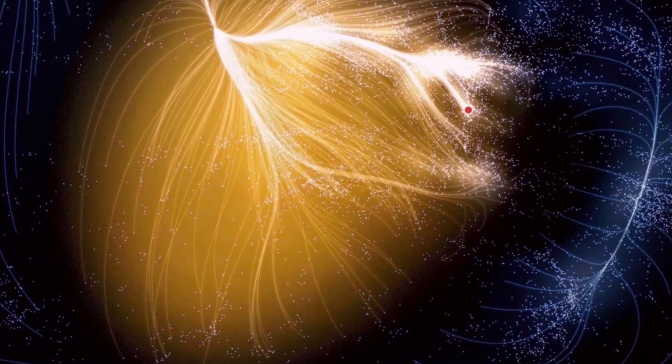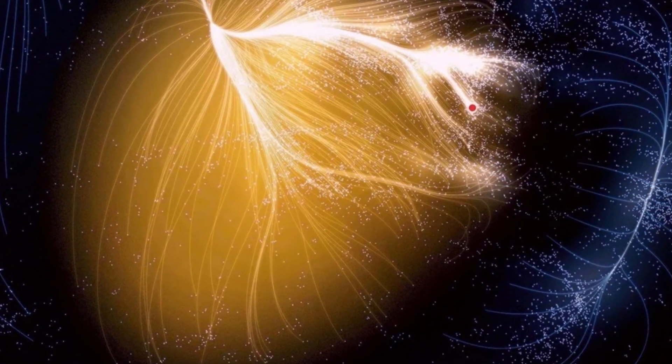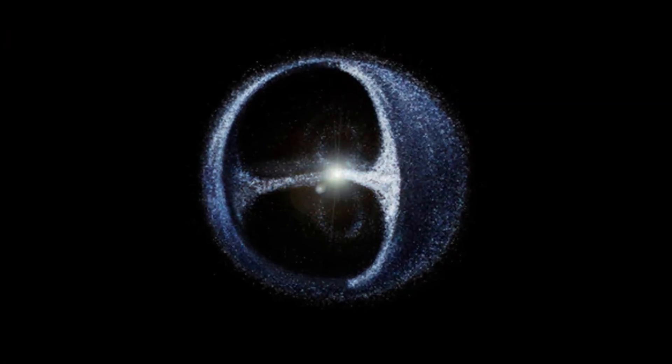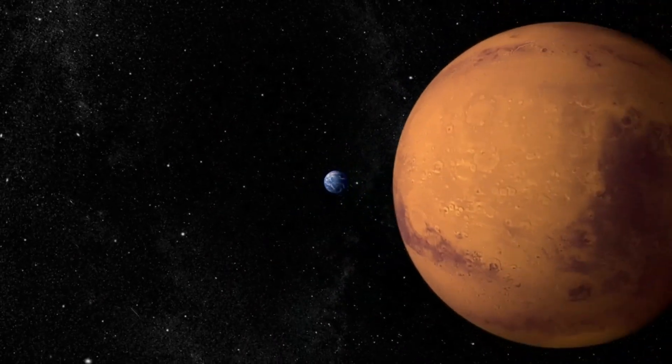From the Great Attractor, a mysterious region of space pulling the galaxies towards it, to the Oort Cloud, a vast spherical cloud of icy planetesimals that surrounds the solar system. These are the places that are still keeping astronomers up at night.